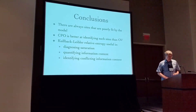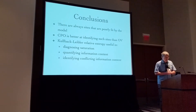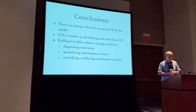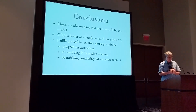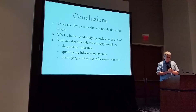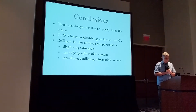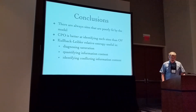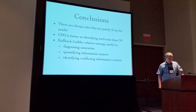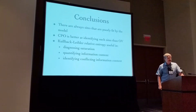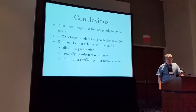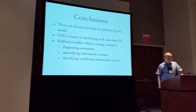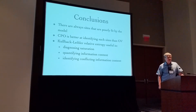In conclusion, there are always sites that are not fit well by the model, and CPO does a better job of identifying such sites compared to OV. Our main point is that using Kullback-Leibler divergence to measure the relative entropy of the posterior compared to the prior is a useful tool for answering many questions about information content — such as whether a particular subset of sites is saturated, how much information about the tree topology or other model parameters is contained in a data subset, and whether information from one data subset conflicts with information from other subsets.